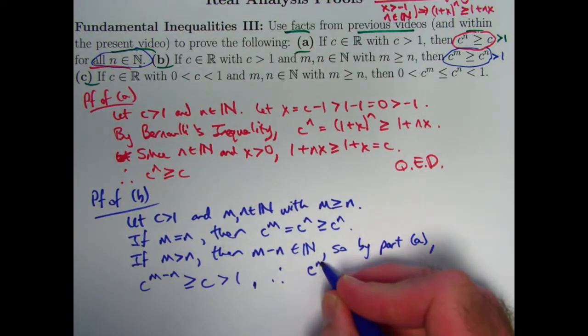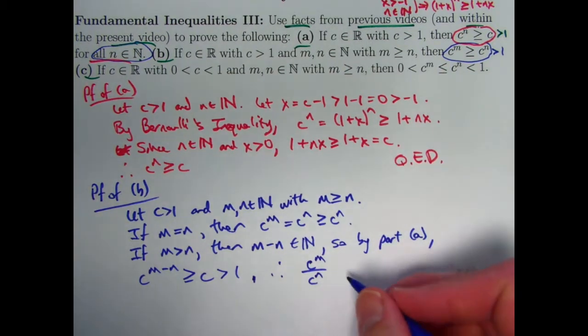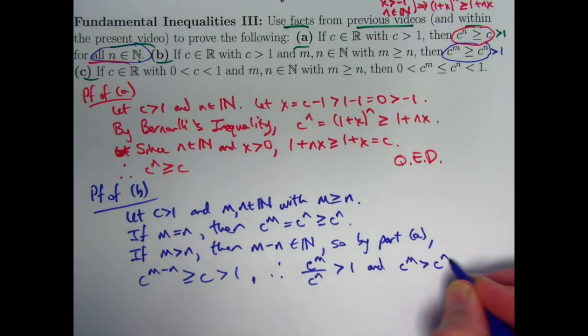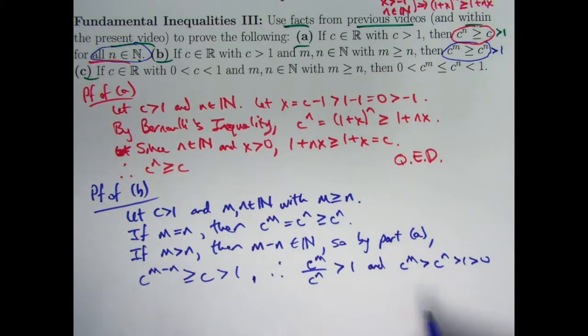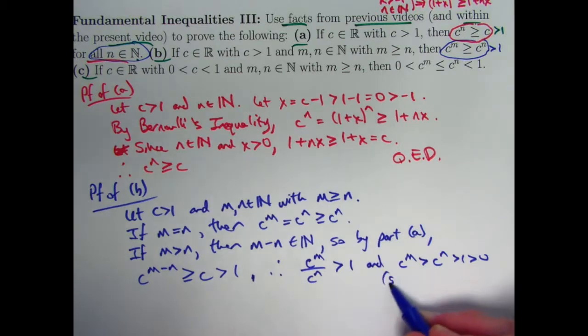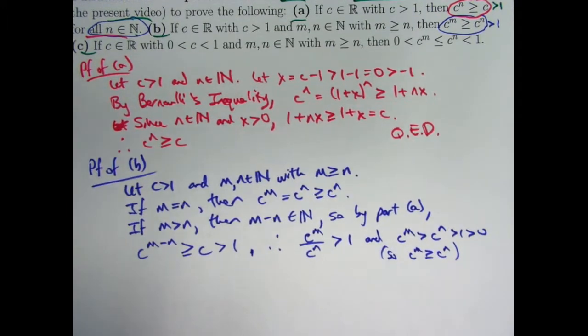Therefore, c^(m-n) is the same as c^m divided by c^n. You may use properties of exponents here. This is bigger than one. And these things are both positive. Therefore, I can multiply both sides by c^n and get this fact here. And this is bigger than one, which is positive. I am dealing with positive quantities here. I essentially get this inequality. This inequality would follow from this one. So c^m is greater than or equal to c^n. I proved something a little stronger. But that's fine. I proved it in both cases. I'm done. That's the end of part B.